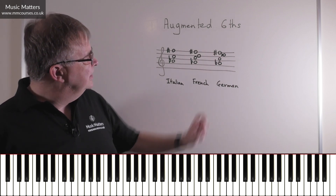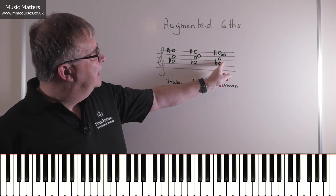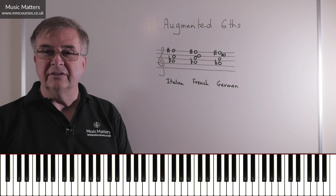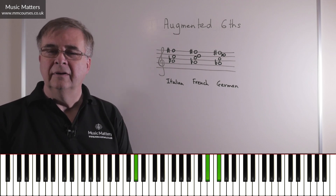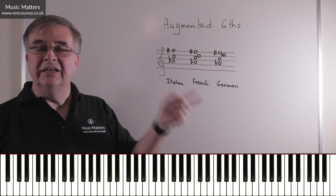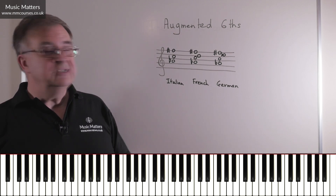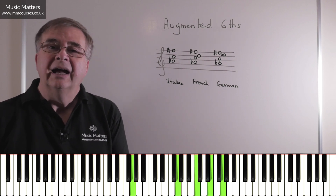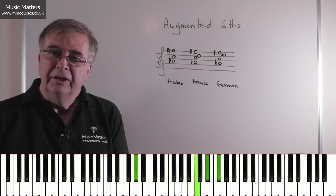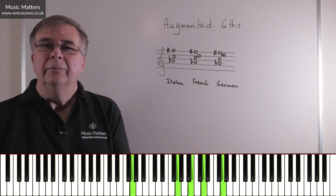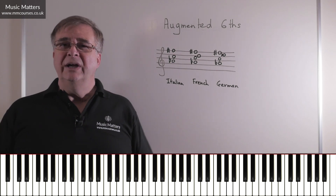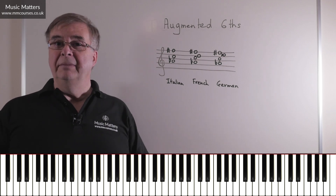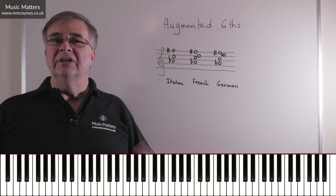The one thing to watch out for with the German sixth: because you have a perfect fifth between A-flat and E-flat, if you go directly to chord V you might end up with consecutive fifths. So with the German sixth it's quite often better to go to I six-four first and then to V — whether in the major or minor. You can hear they're wonderfully colourful chords. If you're writing a piece and it sounds a bit plain, you can slip one of these in every now and again to give it a bit of colour.